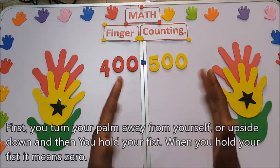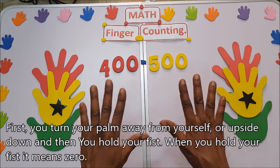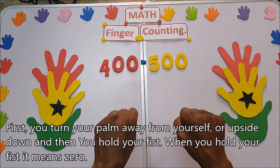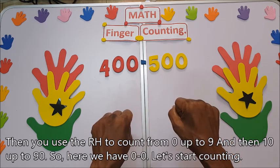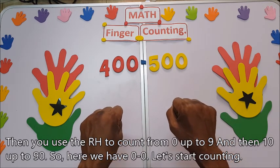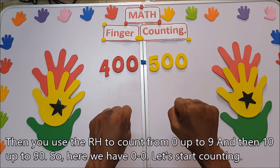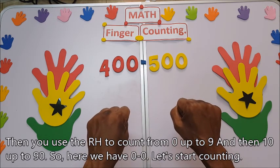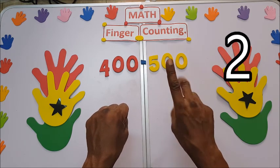First, you turn your palm away from yourself or upside down, and then you hold your fist. When you hold your fist, it means zero. And then you use the right hand to count from zero up to nine, and then 10 up to 90. So here we have zero zero. Let's start counting.